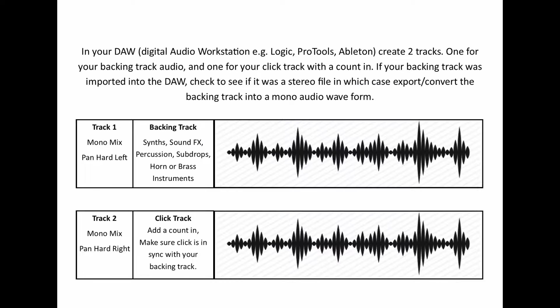Before we get started on using the equipment, we need to do a little bit of preparation with our backing track and click track. In your DAW - your digital audio workstation such as Logic Pro, Pro Tools, or Ableton - you're going to create two separate tracks: one for your backing track audio and one for your click track. Make sure your click track has a count-in so you know when your backing track is about to start.